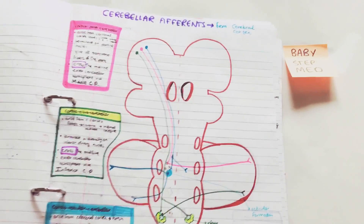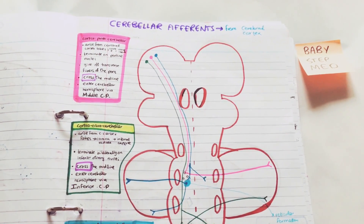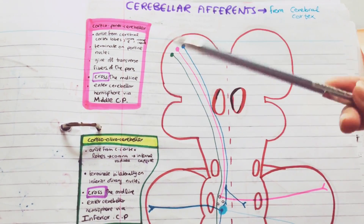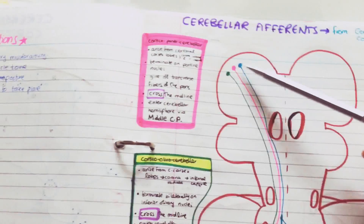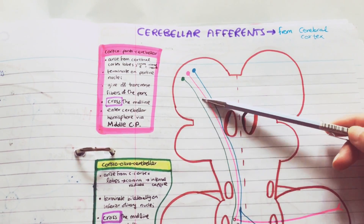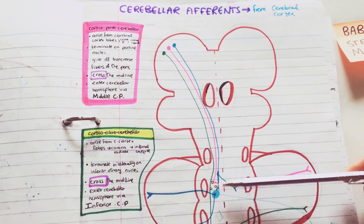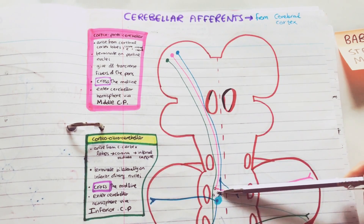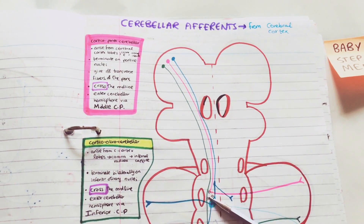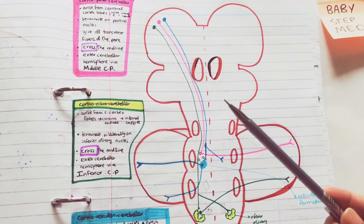Here we have the cerebellar afferents from the cerebral cortex. We are going to start off with the pink ones, which are the cortico-ponto-cerebellar fibers. These arise in the cerebral cortex, enter the corona radiata and then the internal capsule, and then terminate in the pontine nuclei where they give off transverse fibers of the pons. These fibers then cross the midline and enter the cerebellum via the middle cerebellar peduncle.